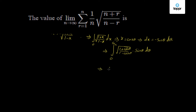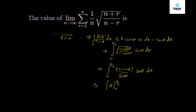By rationalizing the denominator — that is, multiplying and dividing by square root of (1 plus cos θ) — we get (1 plus cos θ) whole squared under the square root in the numerator, and the denominator becomes (1 minus cos θ)(1 plus cos θ) equals (1 minus cos² θ), which is square root of sin² θ, simply sin θ. So sin θ cancels, giving the integral from 0 to π/2 of (1 plus cos θ)/sin θ times sin θ dθ, which splits into integral of 1 dθ plus integral of cos θ dθ, evaluated between 0 and π/2, giving θ and sin θ respectively between those limits.